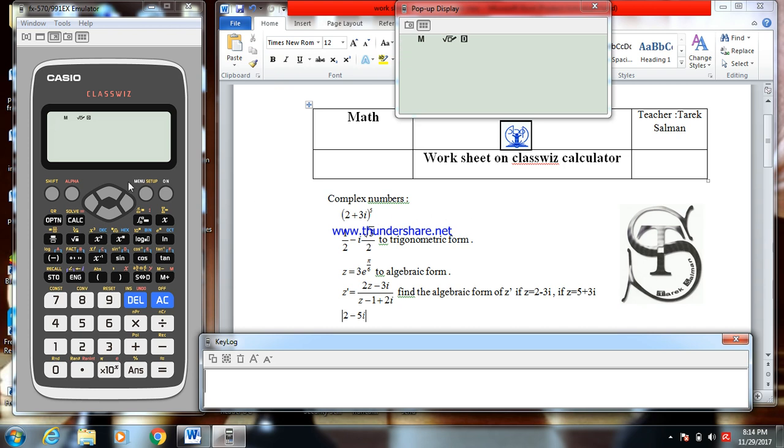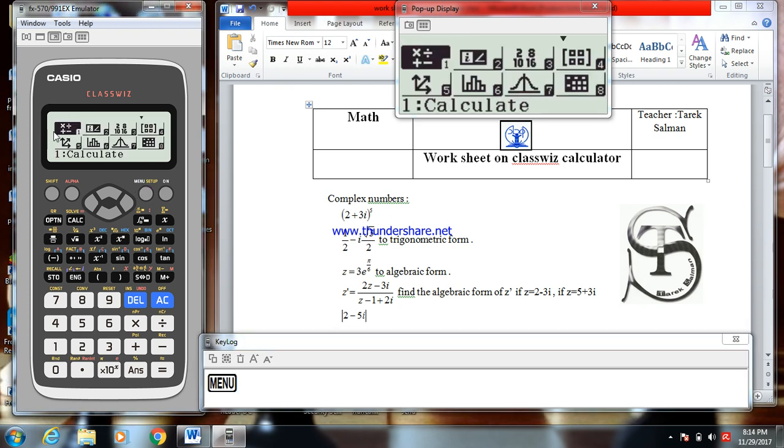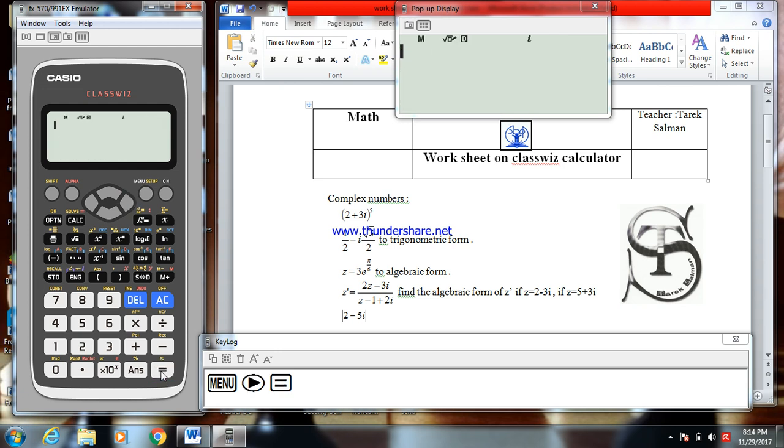So first, go to menu and navigate to complex. So 2 is the complex. I put equal to go inside. Here you can see i. i is the imaginary complex number. The calculator is ready to work with complex numbers.